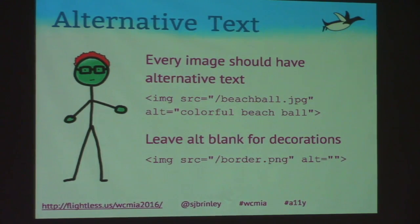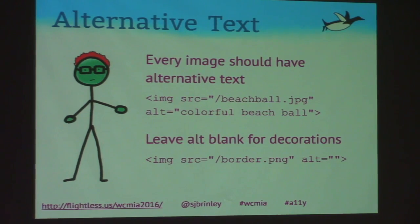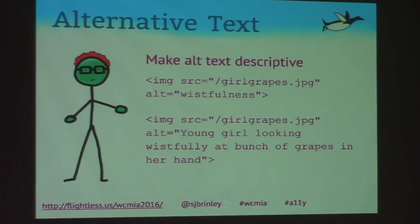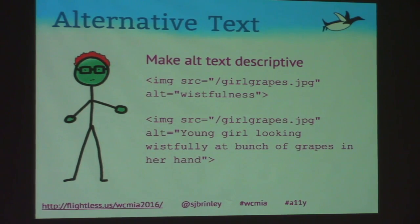For alternative text: all images should have the alt attribute. If the image is purely decorative — like a border — use alt equals empty quotes so screen readers skip it. Otherwise, make your alternative text descriptive: saying 'young girl looking wistfully at a bunch of grapes in her hand' is much more helpful than just 'wistful.'